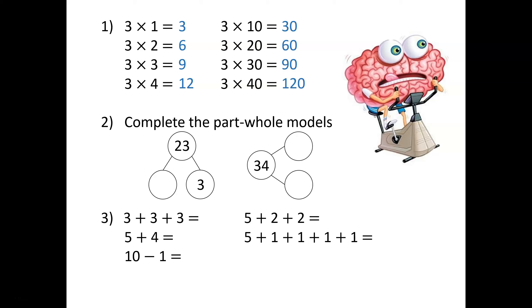In question two, twenty-three can be partitioned — that means broken apart — into twenty and three. And similarly, thirty-four can be partitioned into thirty and four. The two numbers have been partitioned into their tens and ones values. Question three shows different ways to make nine. Now we are ready to learn.